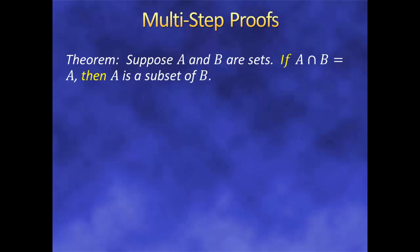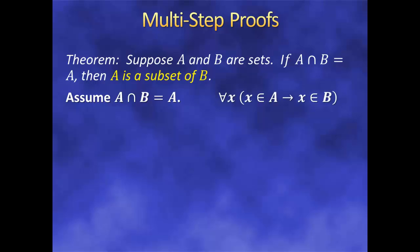First of all, the overall goal is a conditional statement. In this case, we can just do a direct proof, so we'll assume the antecedent — that a intersect b equals a. Now we need to prove that a is a subset of b. The formal definition of a subset means that every element of a is an element of b, or symbolically: for all x, if x is in a, then x is in b. It seems we've got a universal quantifier here that we need to prove. So what do we do? We let x be an arbitrary element, but still of the universal set. Now we need to prove the conditional: if x is an element of a, then x is an element of b.